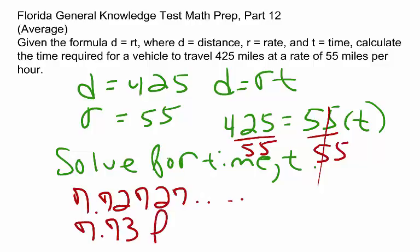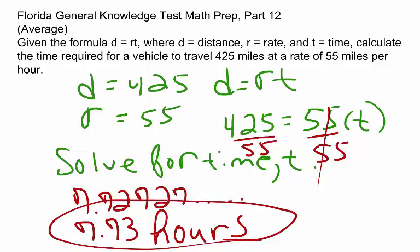So 7.73 hours is the time it takes to travel a distance of 425 miles at a rate of 55 miles per hour. This concludes our example, and we'll see you next time.